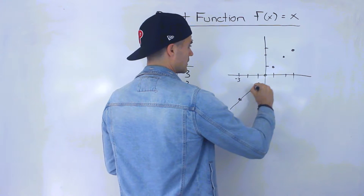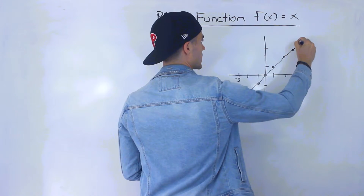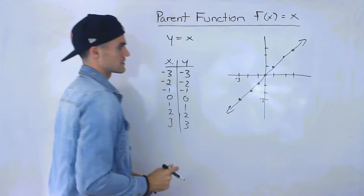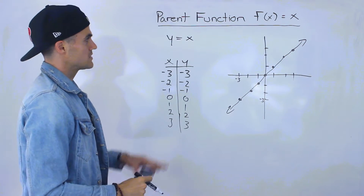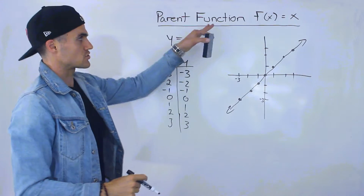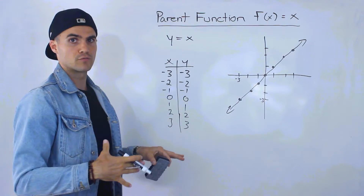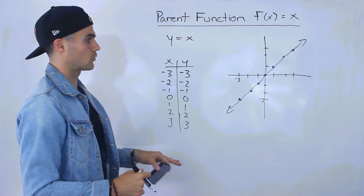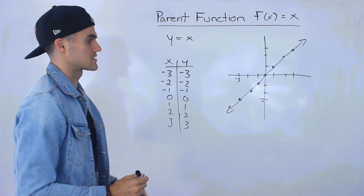So basically, it's just a straight line like this. So y equals x, or f of x equals x — one of the parent functions, the most simple one that we're going to work with — it looks like this.